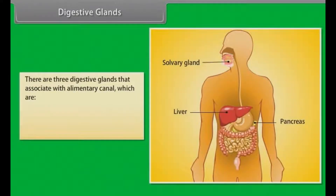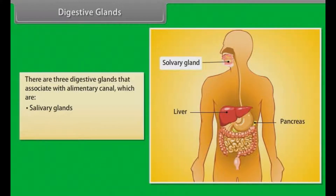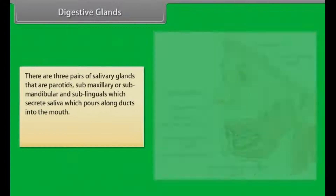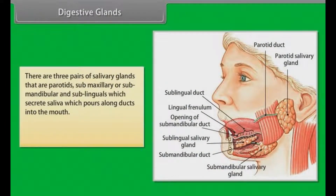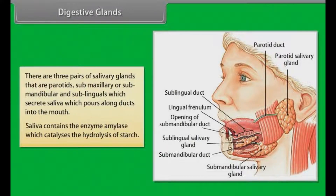There are three digestive glands associated with the alimentary canal: salivary glands, liver, and pancreas. There are three pairs of salivary glands: parotids, submaxillary or submandibular, and sublinguals, which secrete saliva that pours along ducts into the mouth. Saliva contains the enzyme amylase, which catalyzes the hydrolysis of starch.